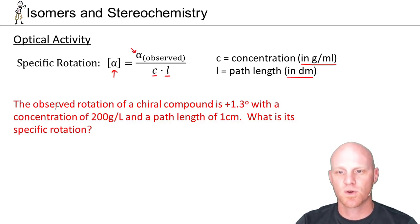Just such a one is written below here. The observed rotation of a chiral compound is +1.3° with a concentration of 200 g/L and a path length of 1 cm. What is its specific rotation?